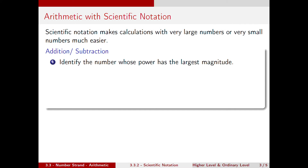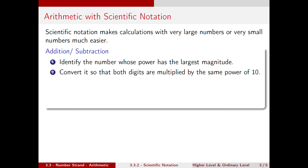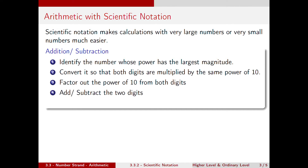To do addition or subtraction we first must identify the number whose power has the largest magnitude, meaning the size of the number. Then convert it so that both digits are multiplied by the same power of 10. Factor out the power of 10 from both digits. Add or subtract the two digits, and round the final answer as needed.